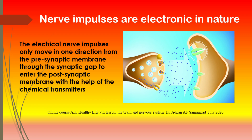The chemical transmitter acetylcholine allows nerve impulses to move through the synaptic gap to the muscles to generate contractions. Glutamate is the chemical transmitter that stimulates neuronal activity in the brain.